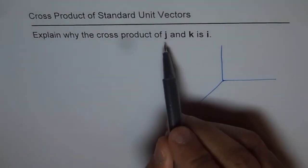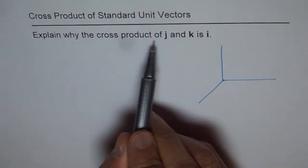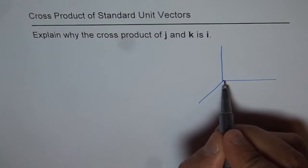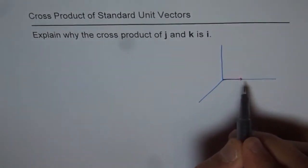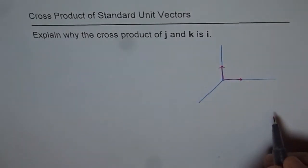So when we say i, j, k, and when we are trying to find cross product of j and k, j is a unit vector along y-axis and k is unit vector along z-axis.